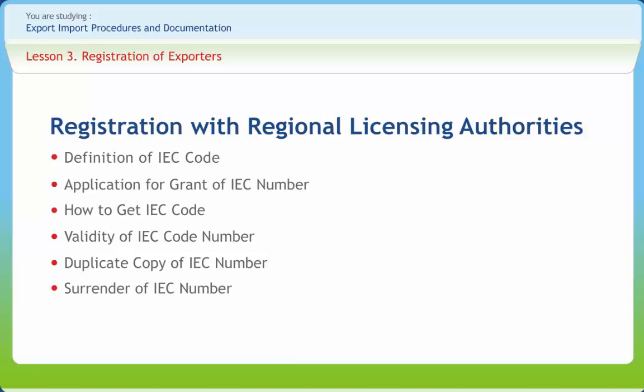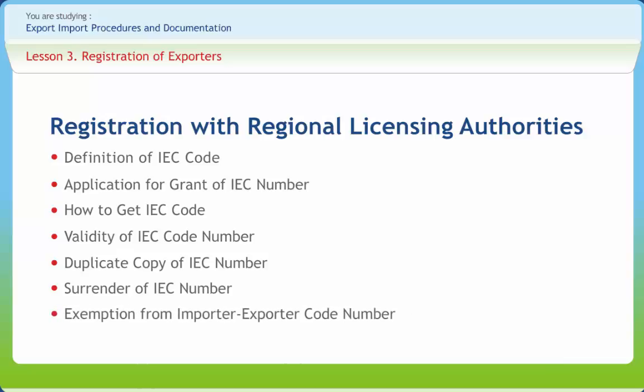On receipt of such intimation, the issuing authority shall immediately cancel the IEC number and electronically transmit it to DGFT for onward transmission to the customs and regional authorities. Certain categories of importers or exporters are exempted from obtaining an Importer Exporter Code IEC number.